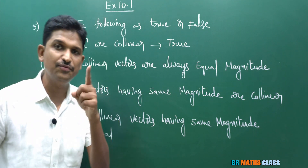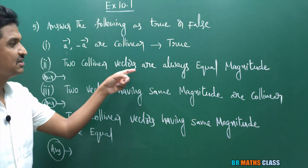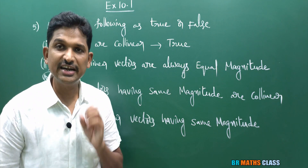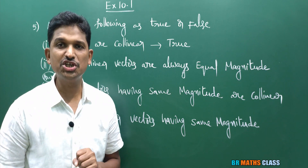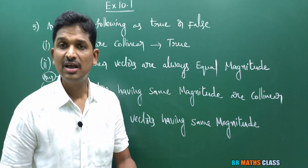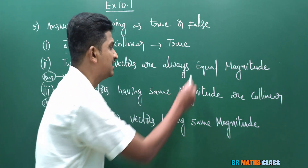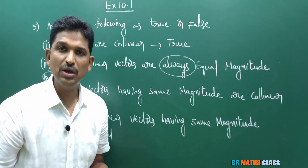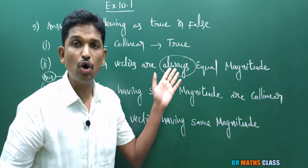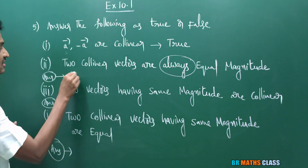Second statement: two collinear vectors are always equal in magnitude. In the definition of collinear vectors, there is no condition related to magnitude. Collinear vectors may or may not be equal in magnitude, so we cannot say they are always equal. The word 'always' makes this wrong. So this statement is false.